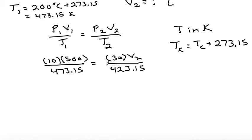So multiplying that all out, 10 times 500 times 423.15 is, sorry, 2,115,750 is equal to 30 times 473.15 is 14,194.5, and then we have the V2 that remains here.